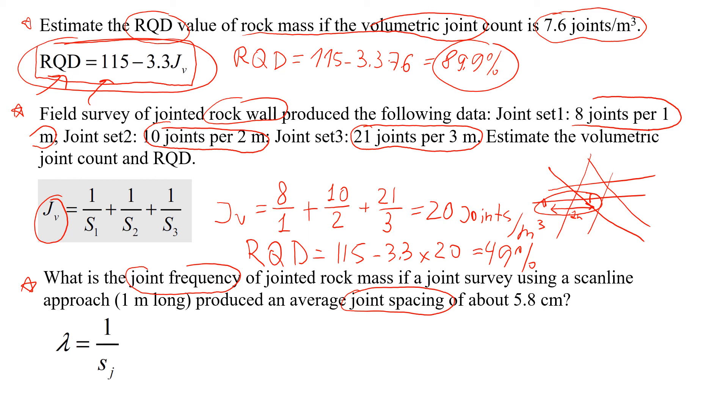So the formula is pretty simple. Joint frequency is equal to the reverse value of the joint spacing. So in this case, we had one meter long space where we counted the joints, and we found out that on average the joint spacing is 5.8 centimeters. It's actually very close to each other. So in this case, we're going to convert it to meters, and that will be 1 over 0.058. That will give us approximately 17 joints per meter.